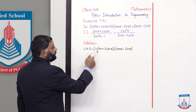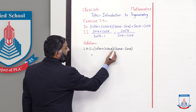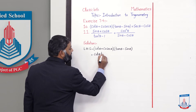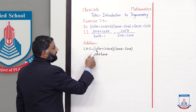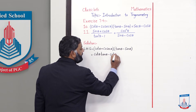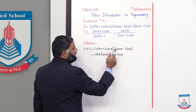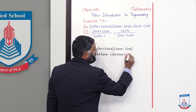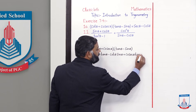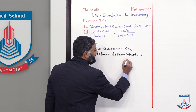Now students, we will multiply these factors: cot θ · tan θ − cot θ · sin θ + cosec θ · tan θ − cosec θ · sin θ.